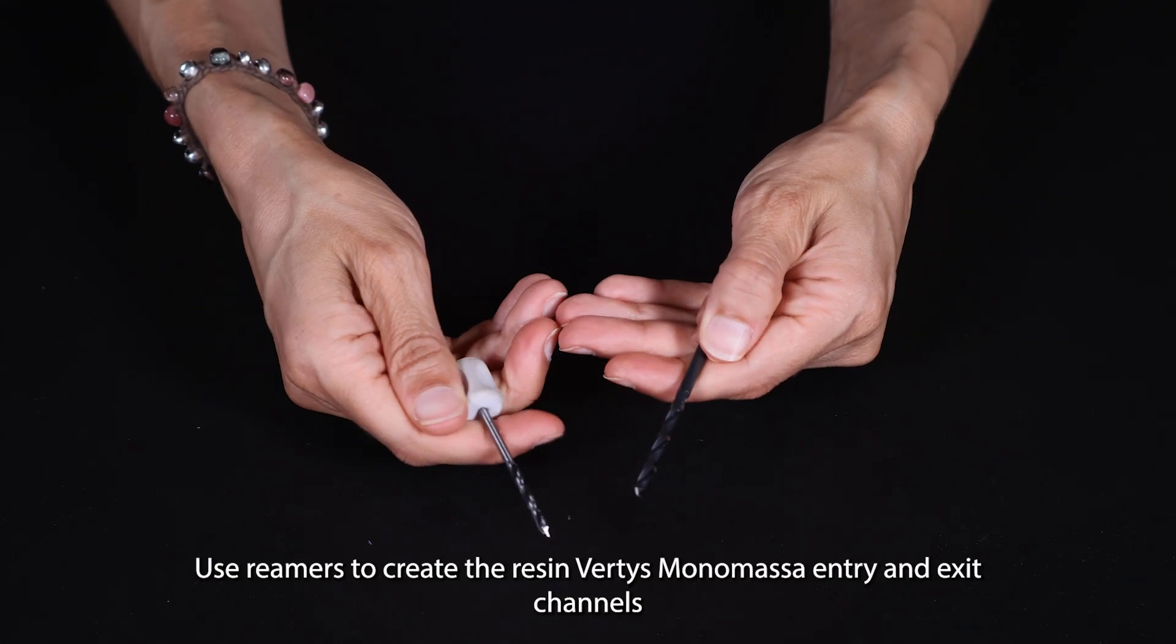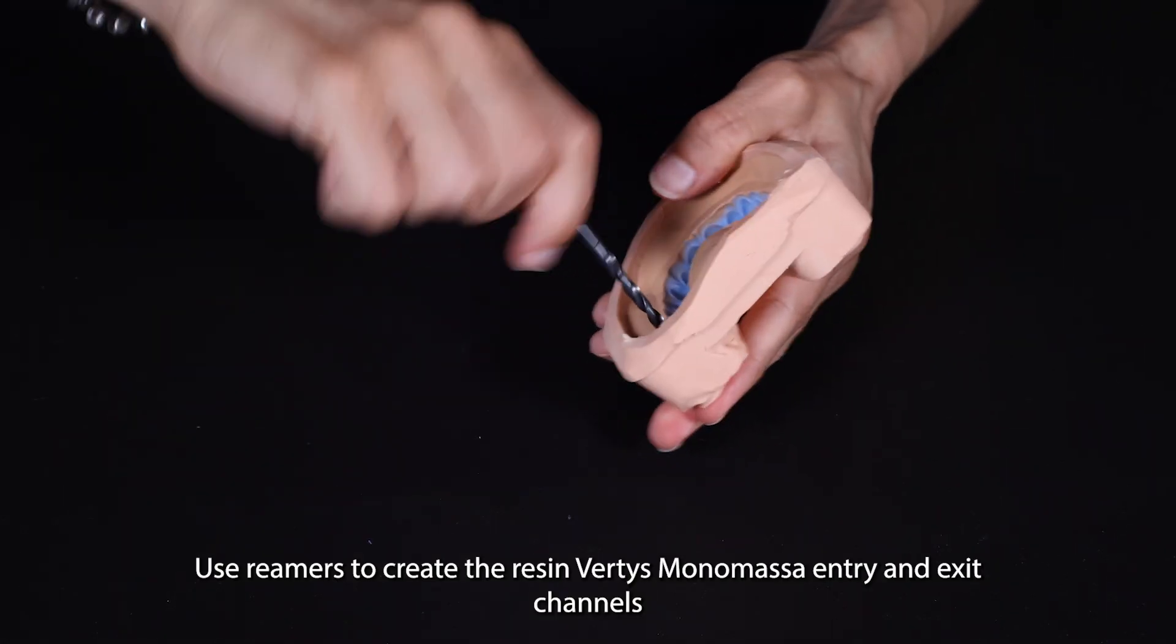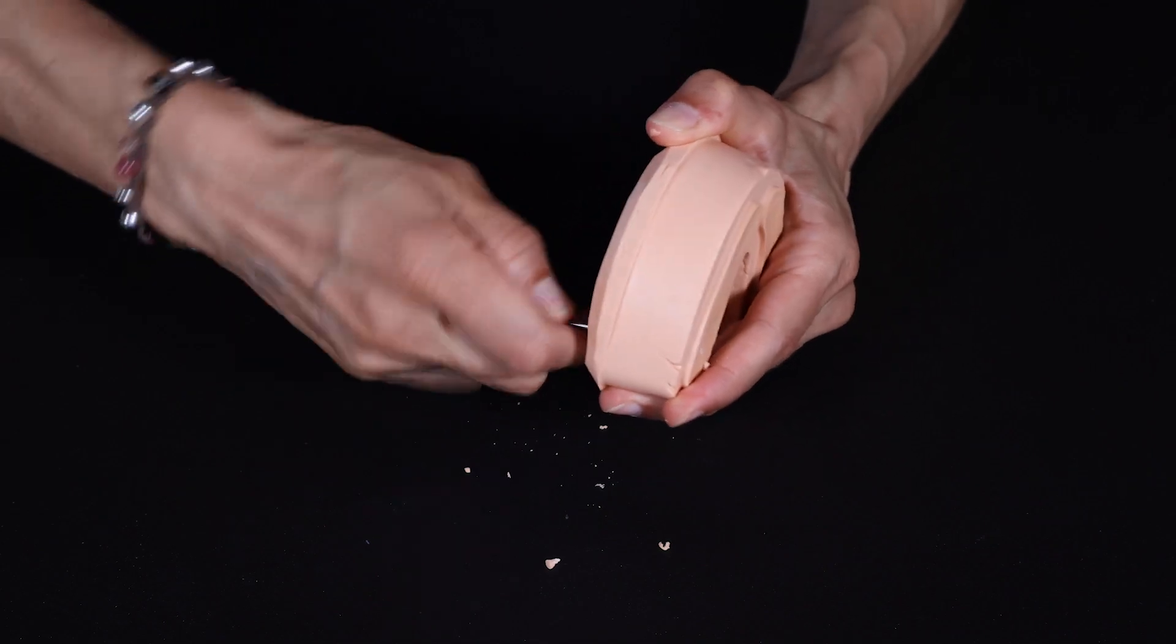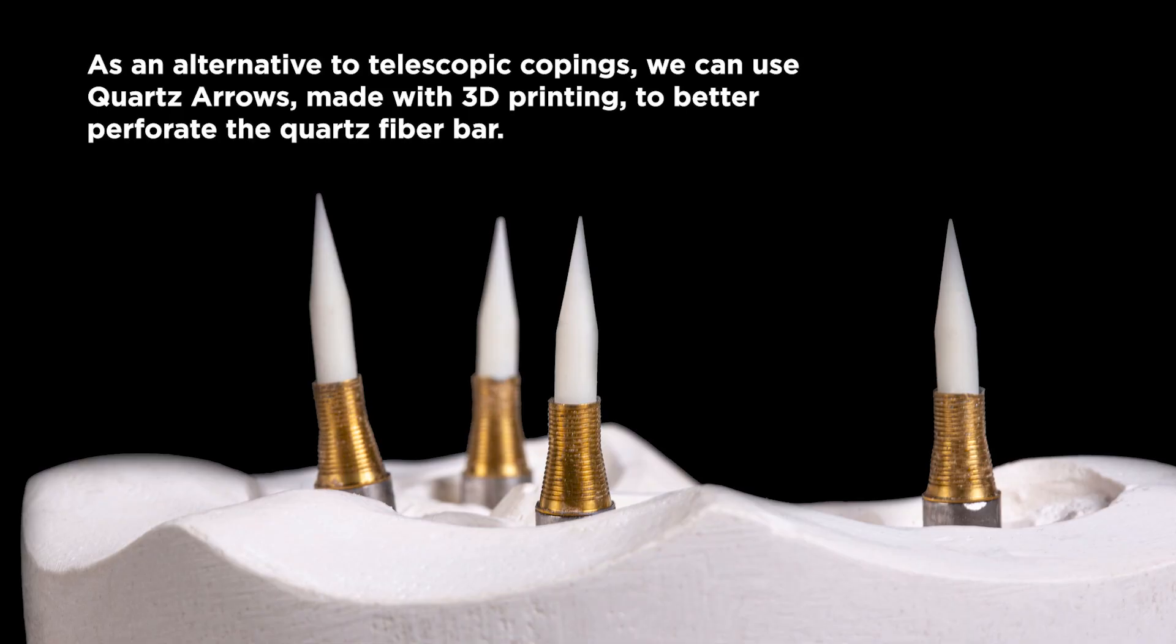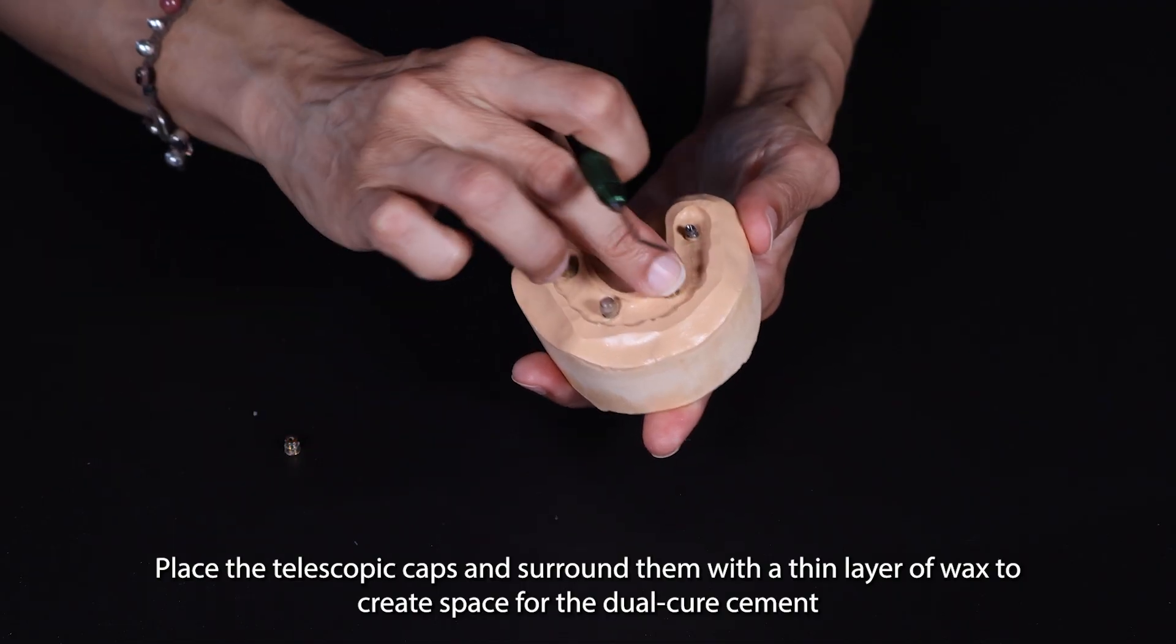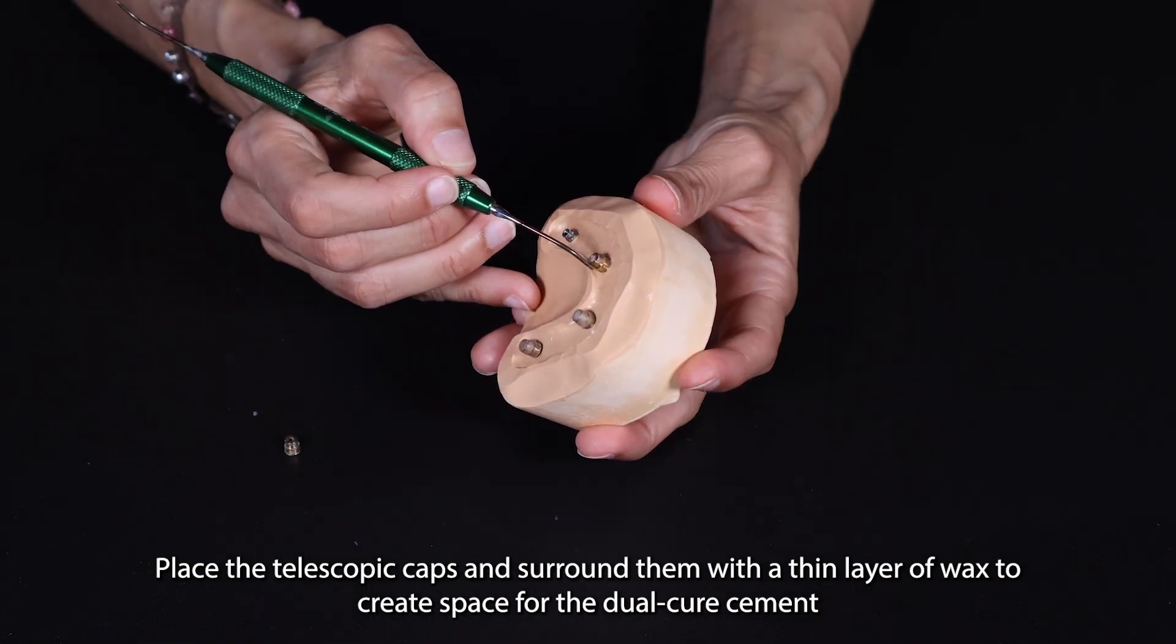Use Remus to create the resin Vertis Monomassor entry and exit channels. Place the telescopic caps and surround them with a thin layer of wax to create space for the dual cure cement.